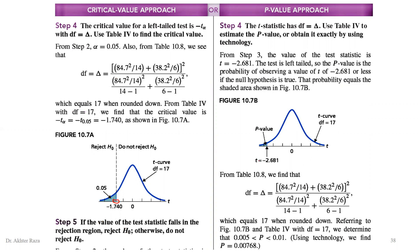For the p-value approach, the value minus 2.681 with degrees of freedom 17 is looked up in the t-table, giving an approximate probability between 0.005 and 0.01. By software, this probability is 0.00768, which is clearly smaller than alpha. We reject the null hypothesis and conclude that the average operating time by the dynamic system is significantly smaller than the average operating time in the static system.